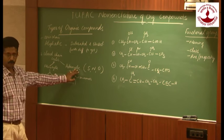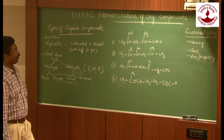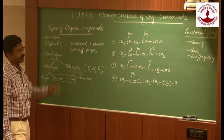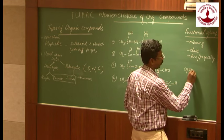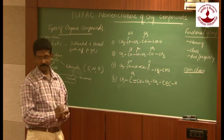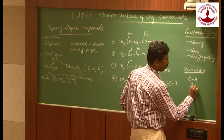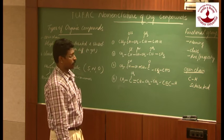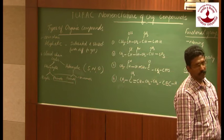Heterocyclic compounds can also be aromatic or non-aromatic. Today we are going to look at IUPAC nomenclature of aliphatic compounds. Aliphatic compounds are open chain compounds, and we start with a simple compound — alkanes. Alkanes are compounds of carbon and hydrogen. They are saturated compounds and contain carbon-carbon single bonds. There are certain rules for naming alkanes. Rule number one: select the longest continuous chain.